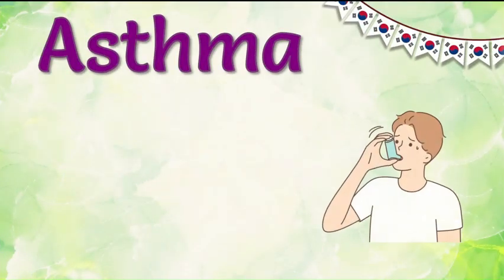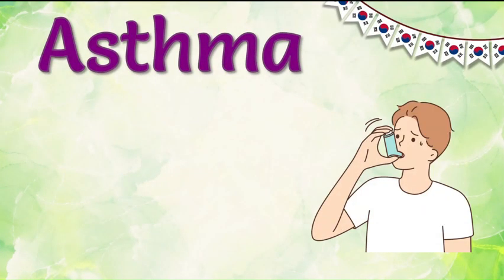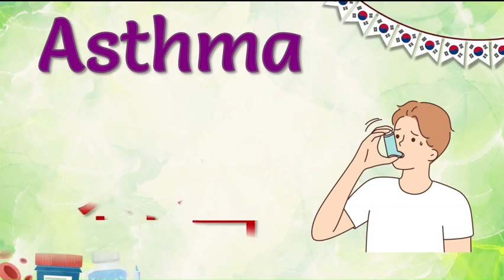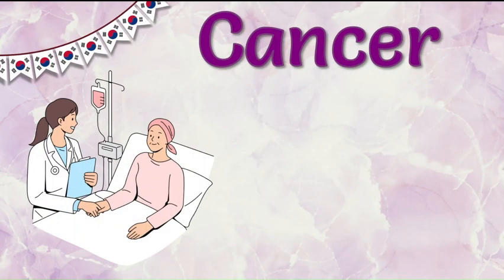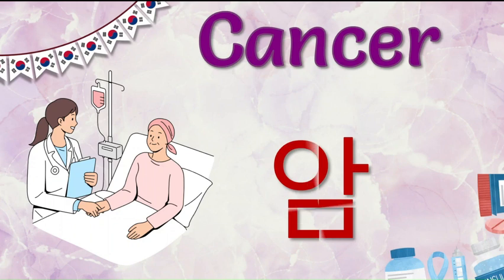It becomes very important for us to know the Korean word for different diseases — for example, if you are suffering from a particular disease, you should be able to explain what kind of disease you have. Now let's start with the first word: the Korean word for asthma, which is 'jonchik.' Next, let's see how to say cancer in Korean. The disease is complicated but the Korean word is super easy — it's a one-syllable word: 'am.'